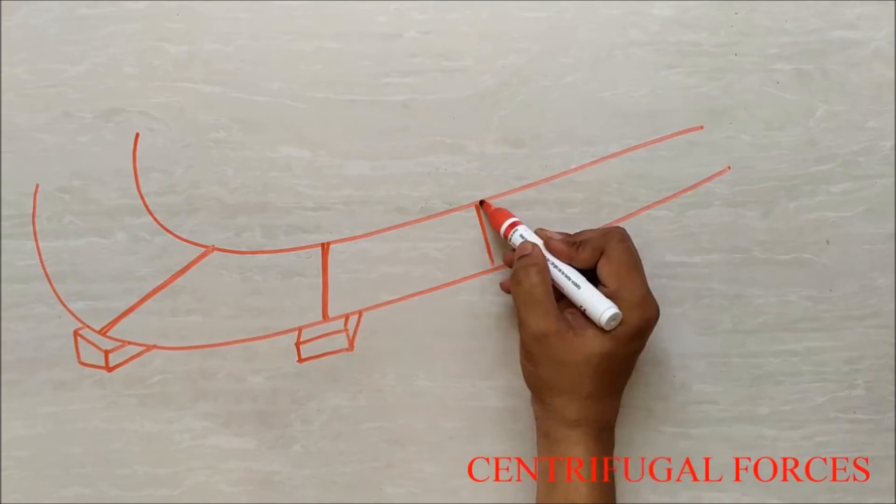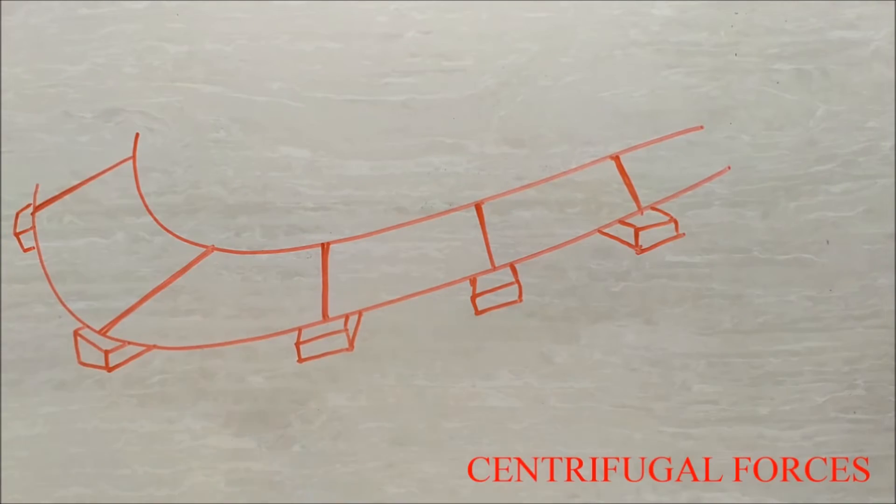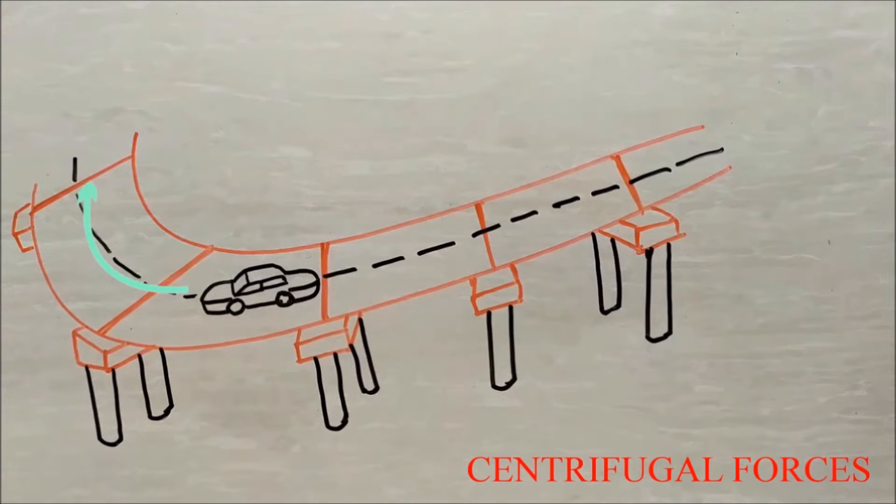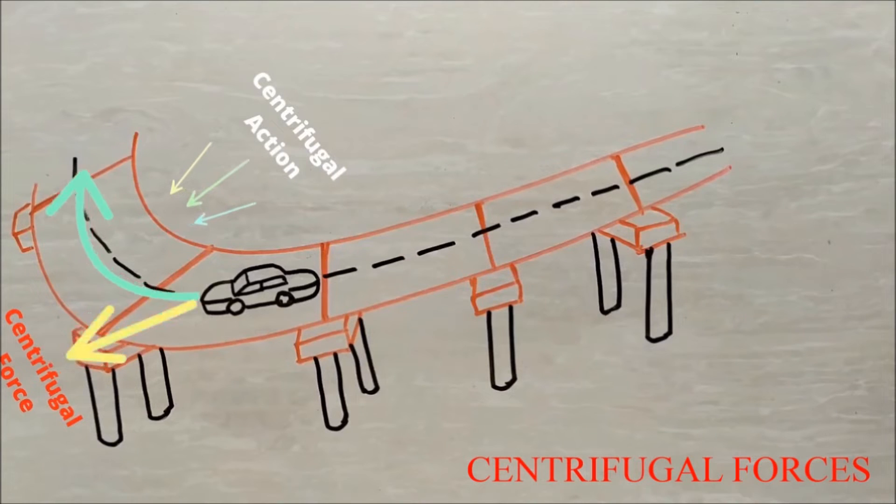Centrifugal forces are the apparent forces that act in an outward direction on any object in a rotating frame. When a bridge is situated on a curve and a vehicle crosses it with velocity, centrifugal force will act. All portions of the structure are affected by the centrifugal action of the moving vehicle.